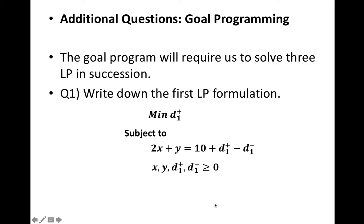We can write down the first LP as follows. Our objective, as we discussed before, is to minimize d_1^+ to make sure that you don't want to exceed the first goal. And subject to, this is your soft constraint: 2x + y = 10 + d_1^+ - d_1^-. And all your deviation variables have to be non-negative.